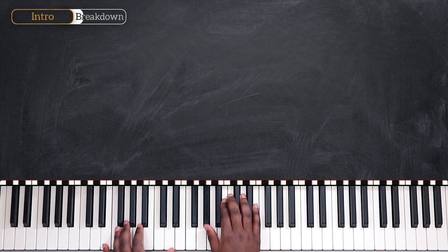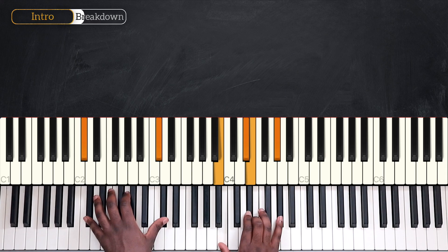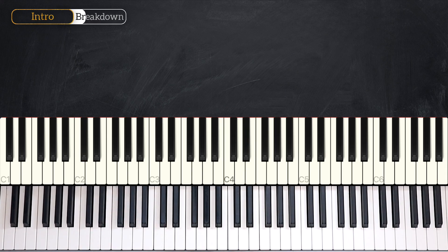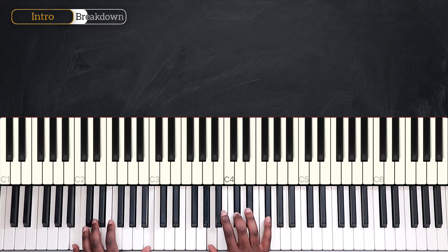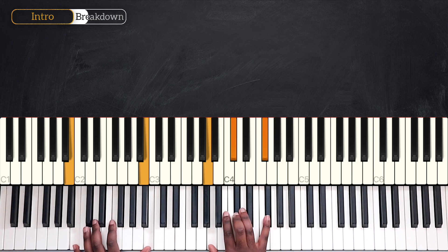So, as we recap, C-sharp minor nine, F-sharp nine with an added 13th, B-nine, resolving to E.